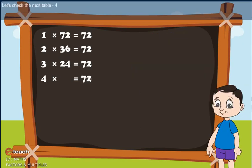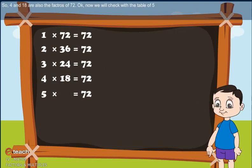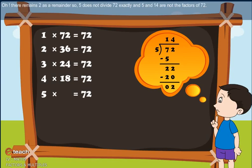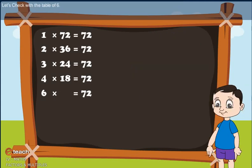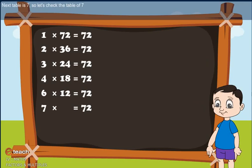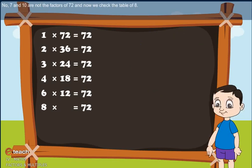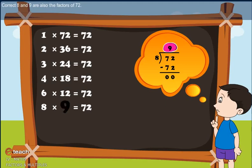Let's check the next table, 4. Yes, 72 is exactly divided by 4 also. So 4 and 18 are also factors of 72. Now we will check with table 5. This leaves 2 as remainder, so 5 does not divide 72 exactly, and 5 and 14 are not factors of 72. Let's check with table 6. Correct — 6 and 12 are factors of 72. Next table is 7. 7 and 10 are not factors of 72. Now we check the table of 8. Correct — 8 and 9 are also factors of 72.